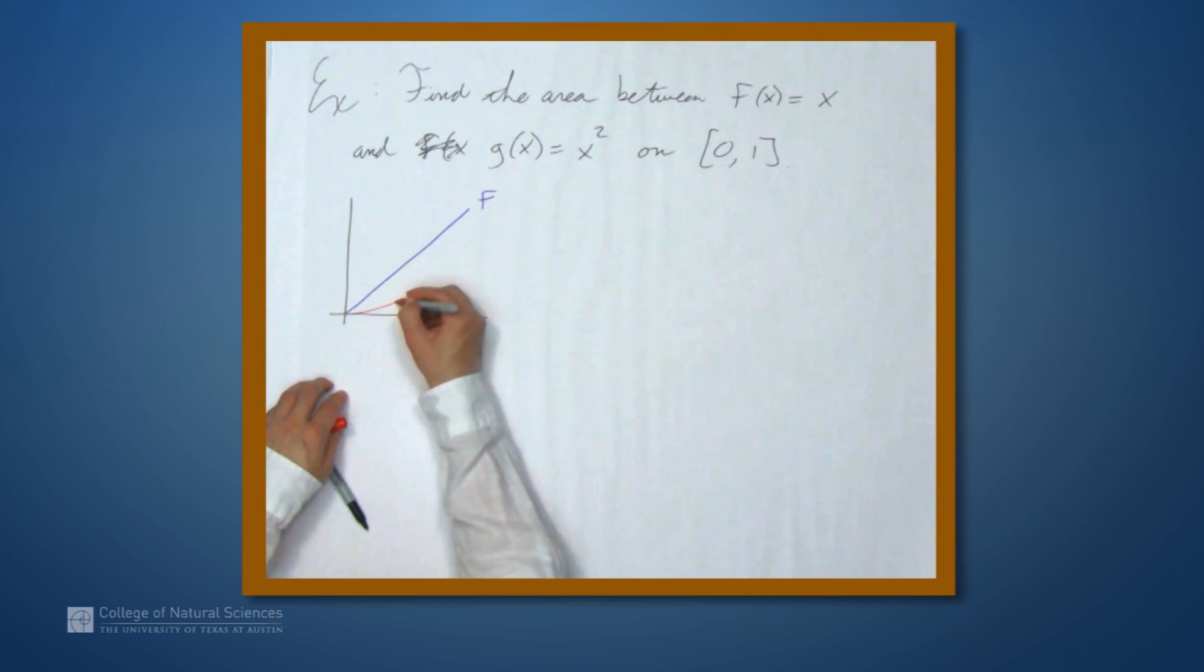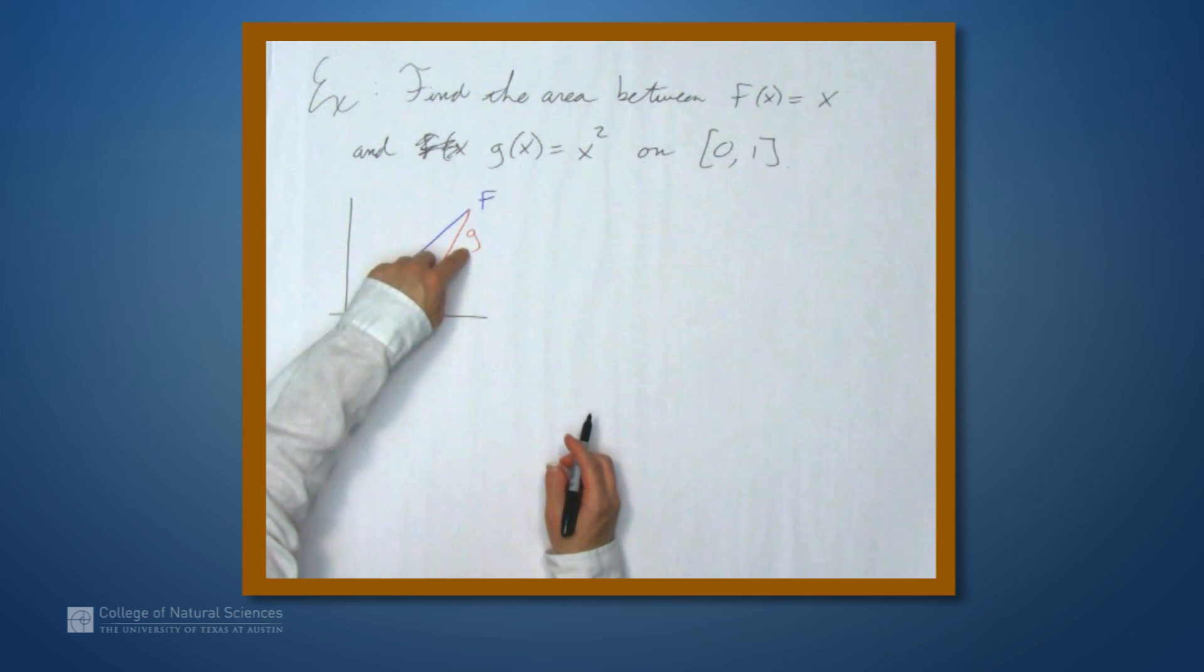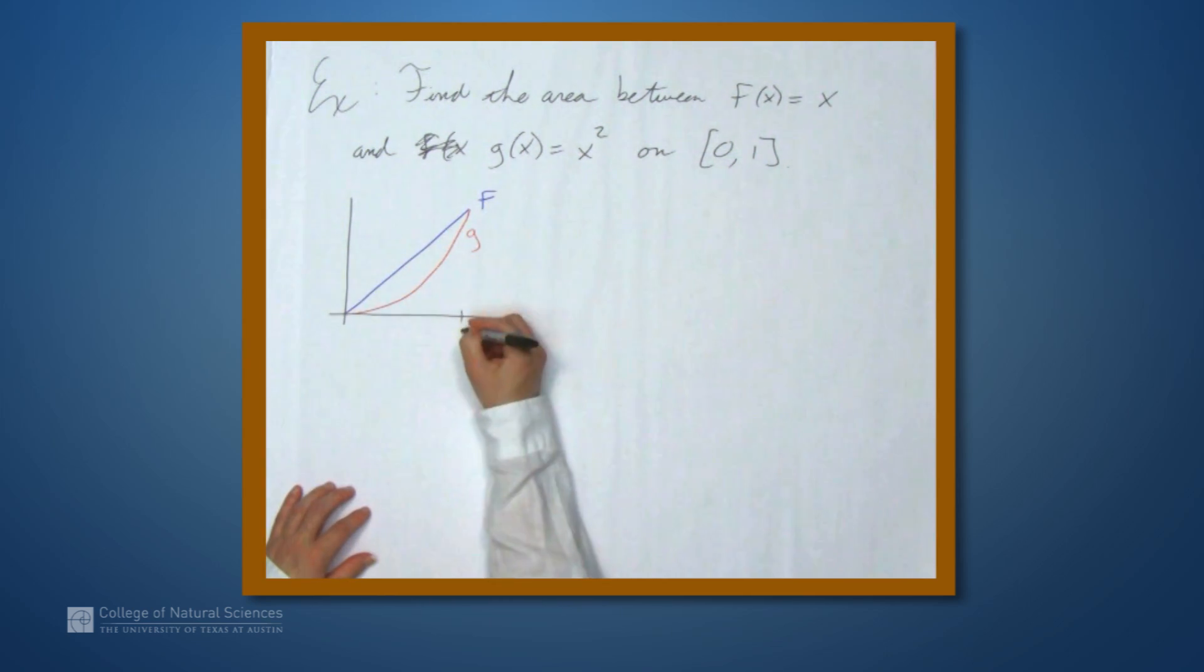And between those two values, it's going to be smaller. So it's going to look something like this. So f is the function that's above g. So here we have 1.